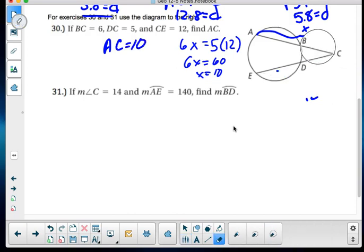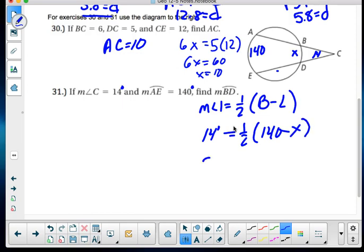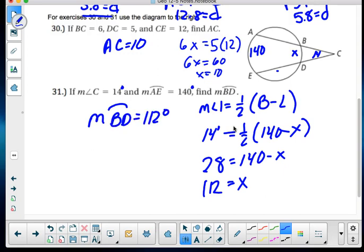Now, in this same picture, in the same picture we're going to use, the measure of angle C is 14. And the measure of AE, AE is 140. Find BD. Well, if this is 14 degrees, and these are 14 degrees, I'm going to use big minus little. So I've got the measure of angle 1 is equal to 1 half my big minus little. And in this case, I've got 14 degrees. That's my angle. And I've got 1 half of 140 minus X. So I've got 28 is equal to, and I'm multiplied by 2 on both sides, 140 minus X. And I'm going to subtract by 28 and 140. And I get 112 is equal to X. So my measure of arc BD is going to be 112 degrees. So those are my answers on those.